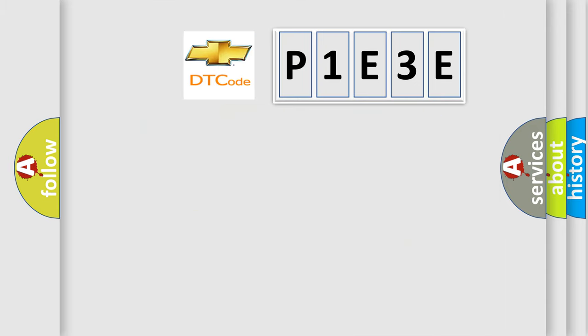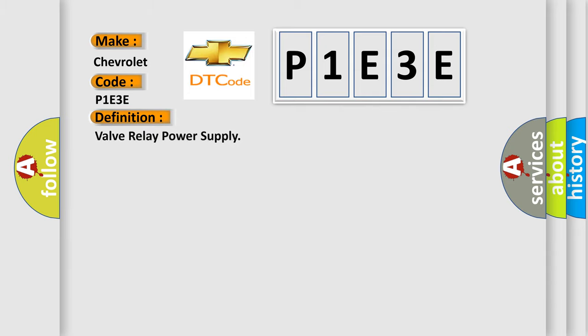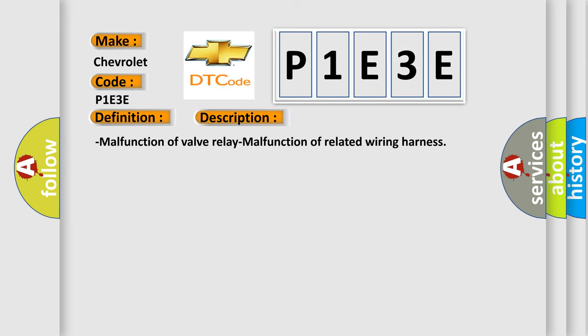So, what does the diagnostic trouble code P1E3E interpret specifically for Chevrolet car manufacturers? The basic definition is Valve Relay Power Supply, and now this is a short description of this DTC code: Malfunction of Valve Relay, Malfunction of Related Wiring Harness.